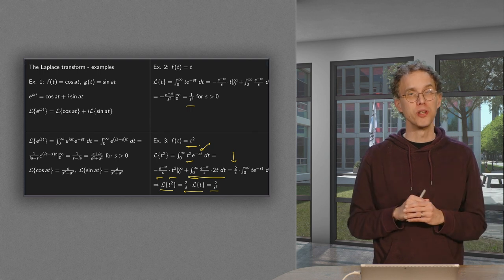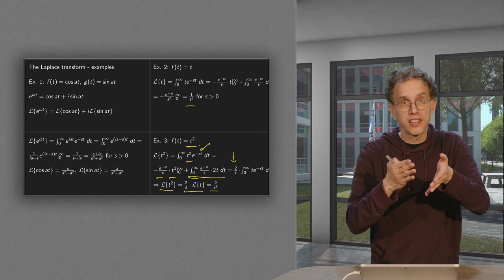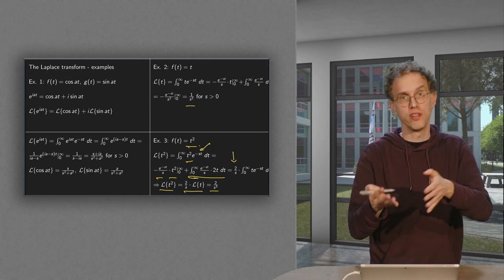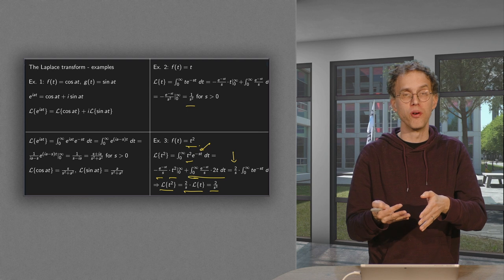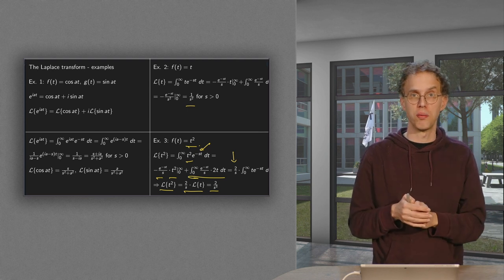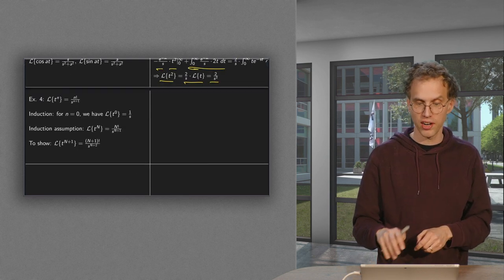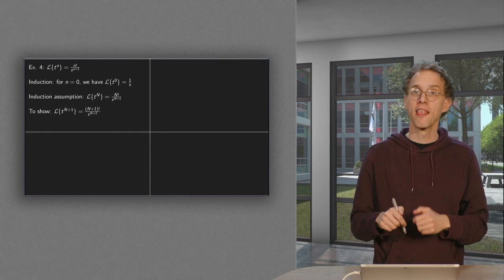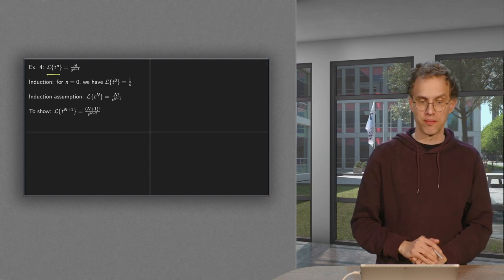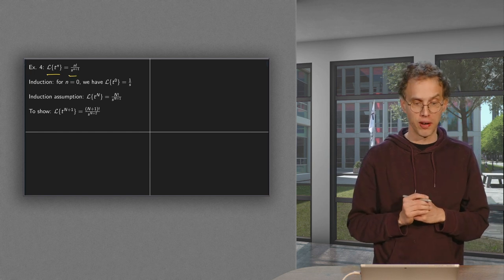Now we see the pattern. For t³, after one integration by parts we have a factor times the Laplace transform of t², which we already know. For t⁴, after one integration by parts we are back at the Laplace transform of t³. This gives us the Laplace transform of t to the power n: it is n factorial divided by s to the power n plus 1.